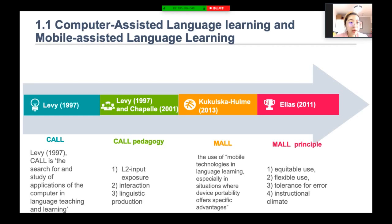With the rise of mobile devices, small screens are everywhere. KH in 2013 defined that MALL is the use of mobile technologies in language learning, especially in situations where device portability offers specific advantages. In 2011, Allies put forward the MALL principles. Among them, four are the most important: equitable use, flexible use, tolerance for error, and instructional climate. We will analyze them later.